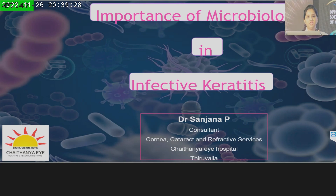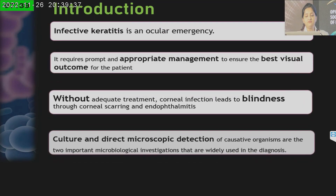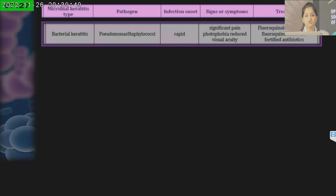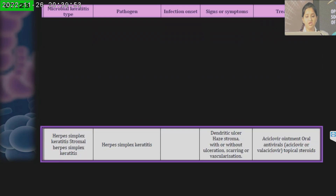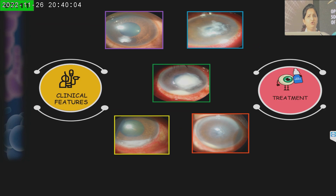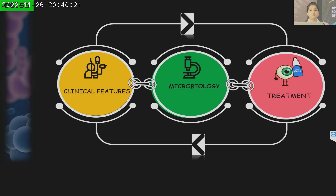My colleague Dr. Vivek has already explained in detail the classical features of all these bacteria and fungi. Infective keratitis is an ocular emergency. If appropriate treatment is not given, these patients can go in for corneal scarring or even endophthalmitis. Culture and direct microscopy play a key role in their diagnosis. Based on clinical features alone, we normally tend to treat patients directly. But do you think all the ulcers read the textbook? Organisms may not follow classical features every time — they may already have been treated with steroids, antibiotics, or antifungals. Hence, microbiology forms a connect between the clinical features and the treatment, yielding best results.